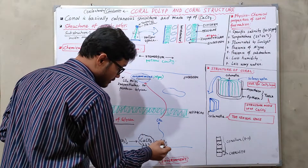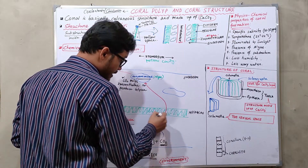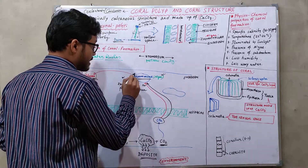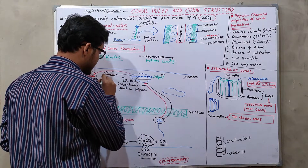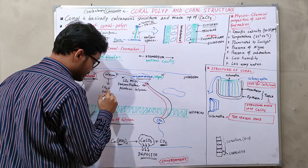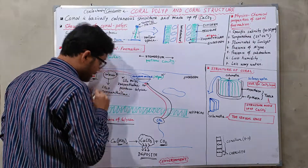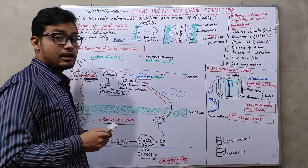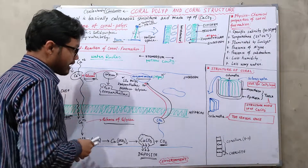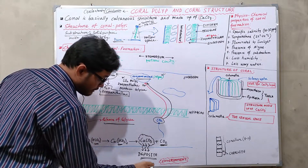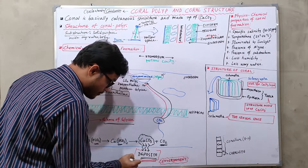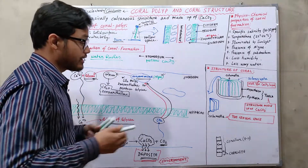The CO2 released in this process recycles from the ectoderm back to the endoderm, where it reacts with zooxanthellae to produce more glycan. This cycle continues, and the amount of calcium carbonate deposition increases more and more, ultimately building up the coral structure.